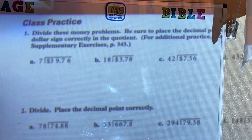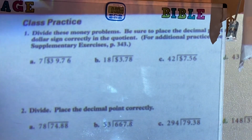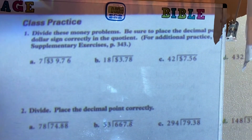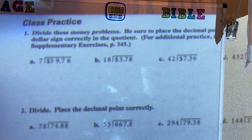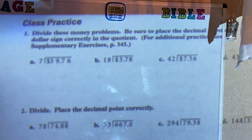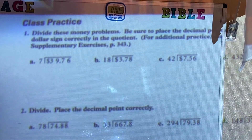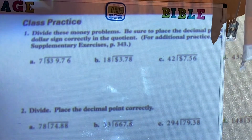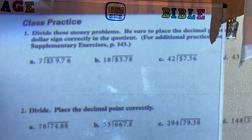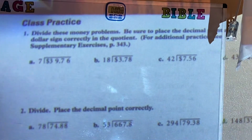Before we do that, we need to know the rule. When we are dividing decimals, we need to follow this specific rule: when dividing a decimal by a whole number, we need to place a decimal point in the quotient directly above the decimal point in the dividend.